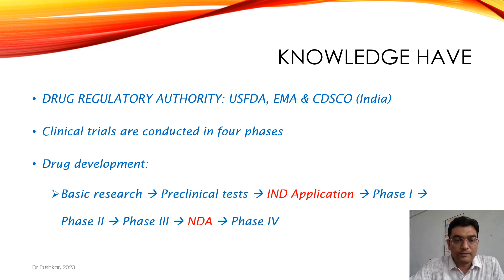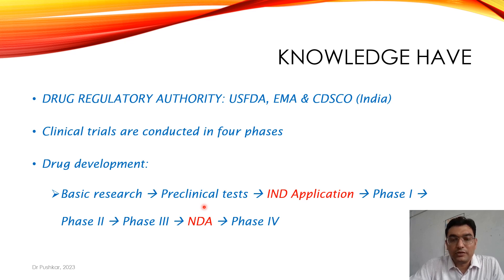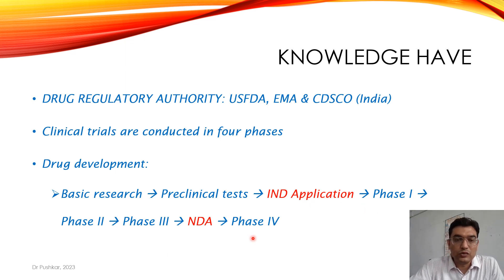We have seen that there are four phases in clinical trials: Phase 1, 2, 3, and 4. The drug development process starts from basic research in the labs, then it goes to animal testing, that is pre-clinical testing. Then the sponsor files for the IND application — Investigational New Drug application — to the FDA, and the drug goes into Phase 1 of clinical trials, then Phase 2.